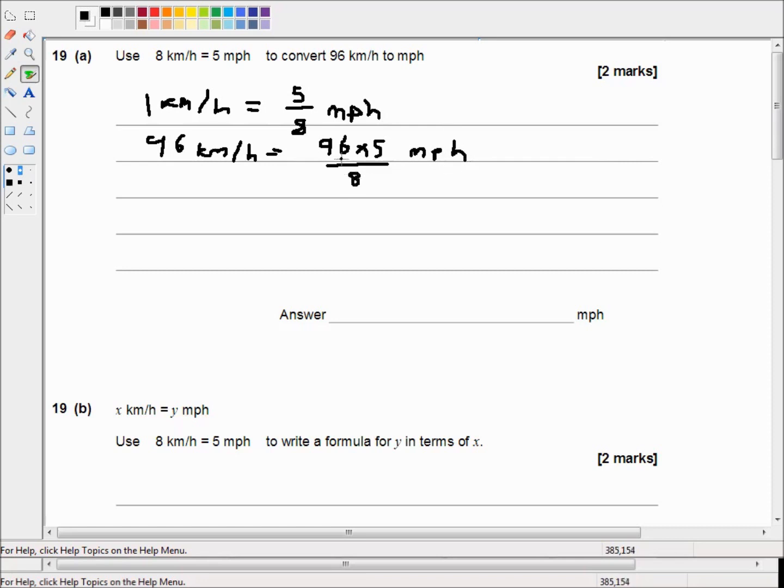Well 96 looks like it'll divide into 8. Let's just work out what that is. 10 times 8 is 80. 11 times 8 is 88. 12 times 8 is 96. So that's 12. So that will cancel and that becomes 12. 12 times 5 is equal to 60. So our answer is 60 miles per hour.